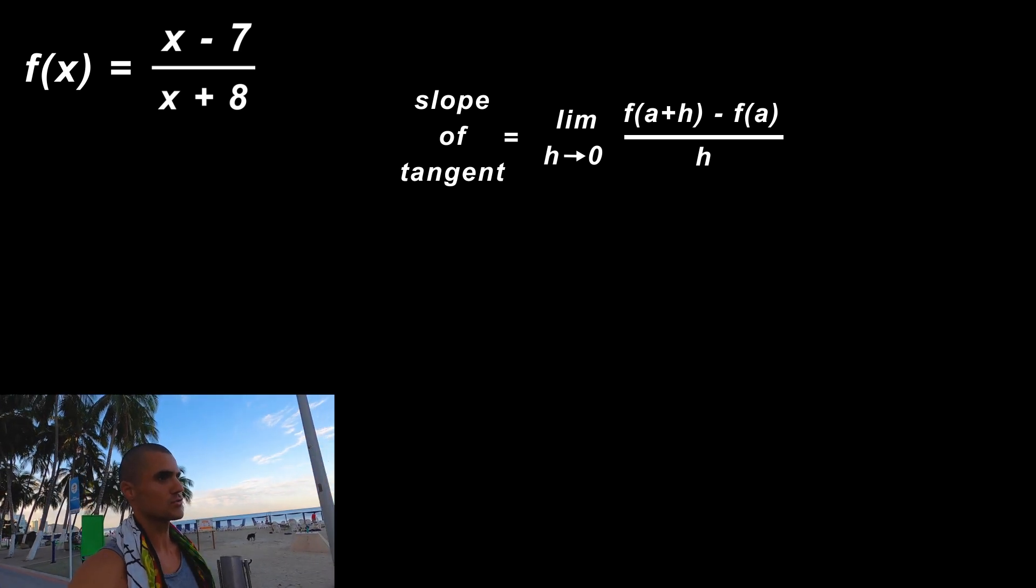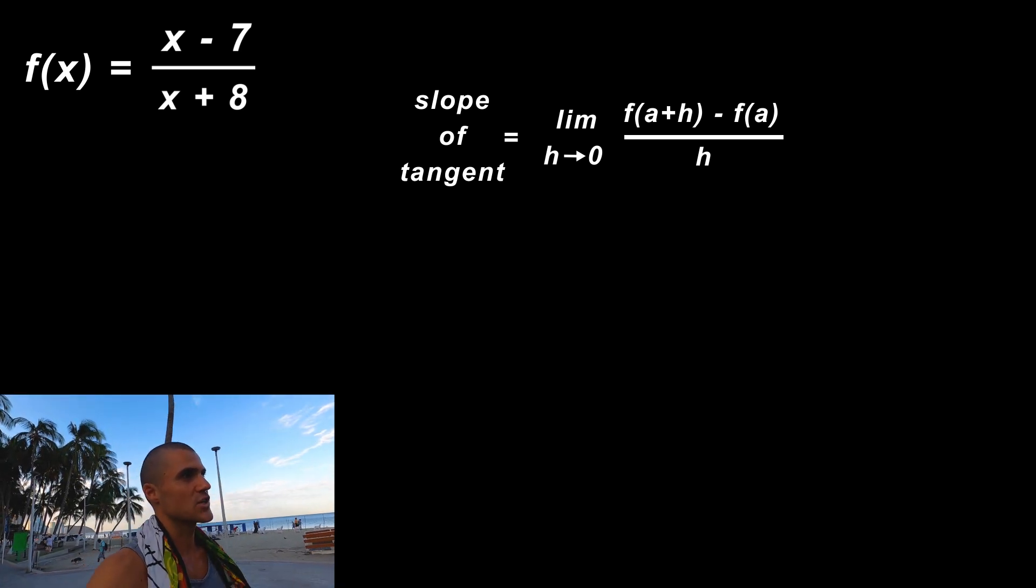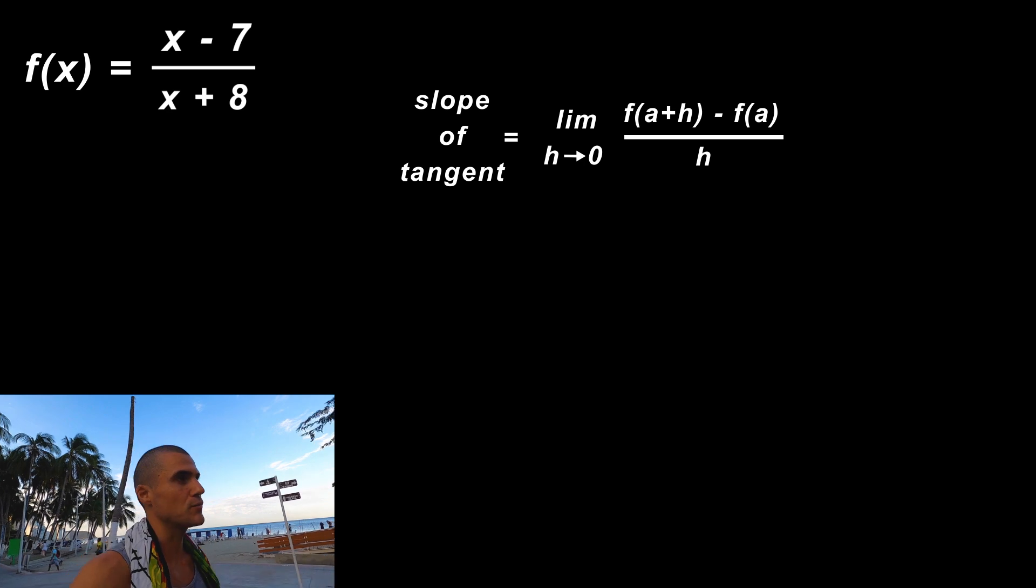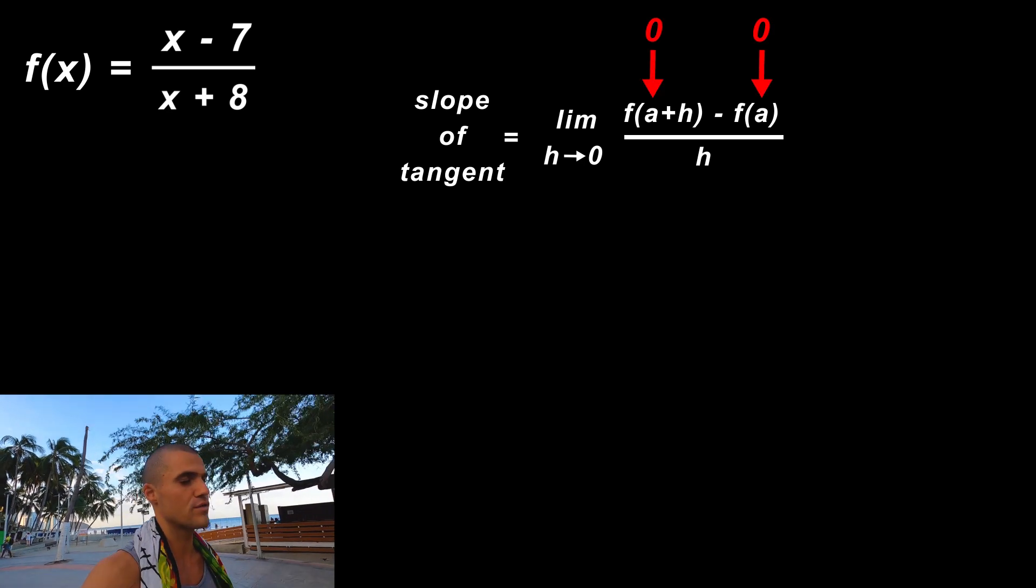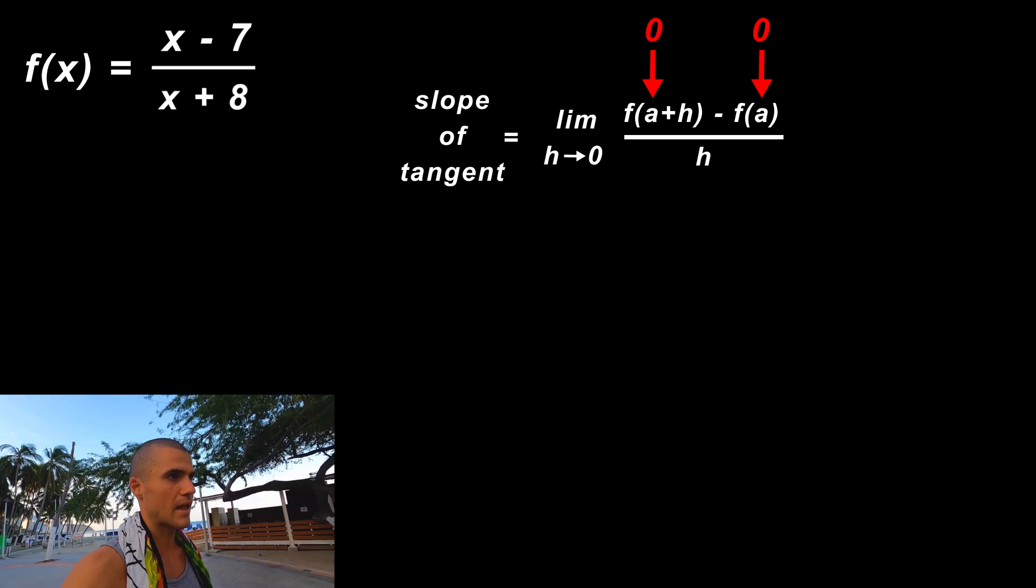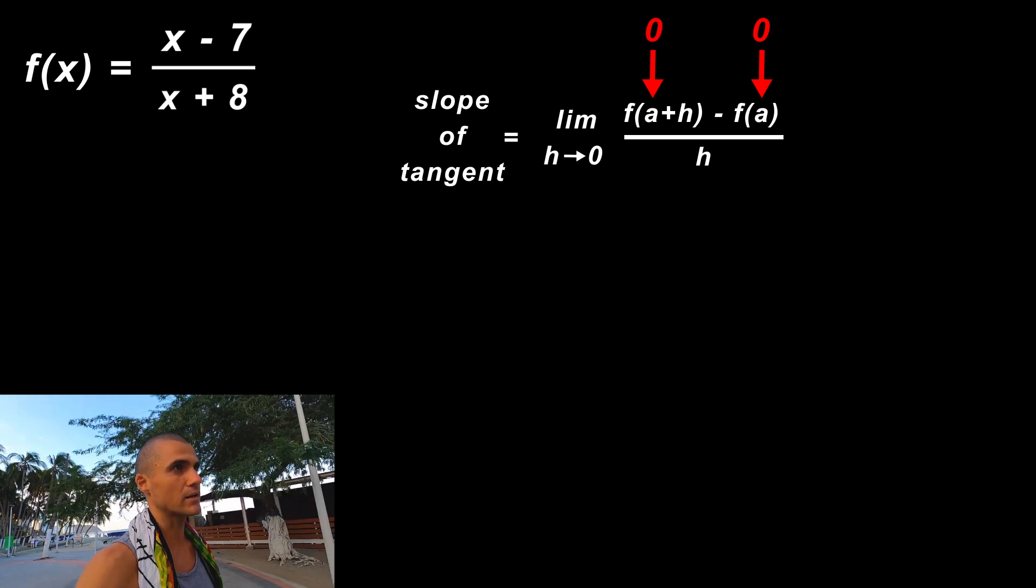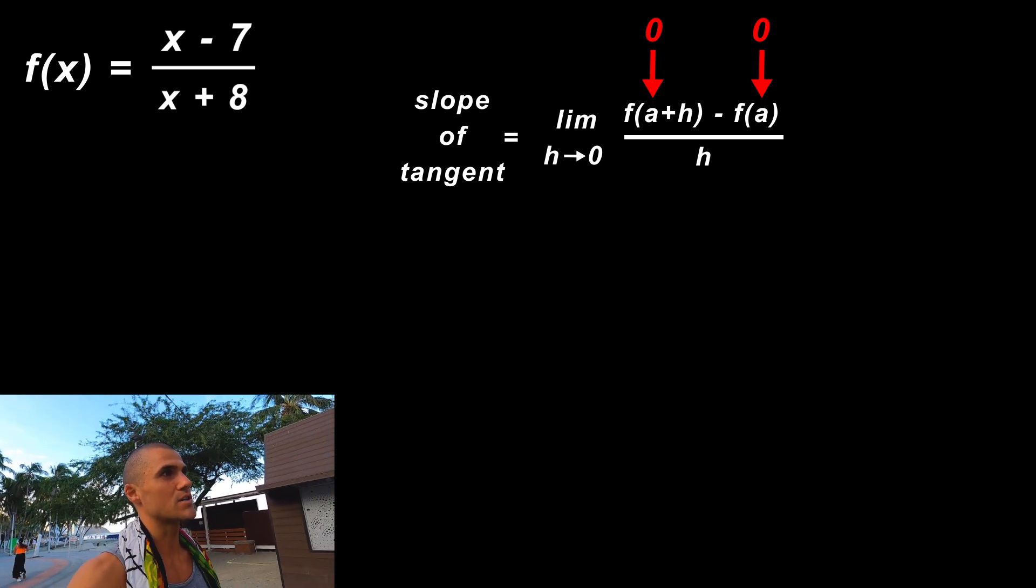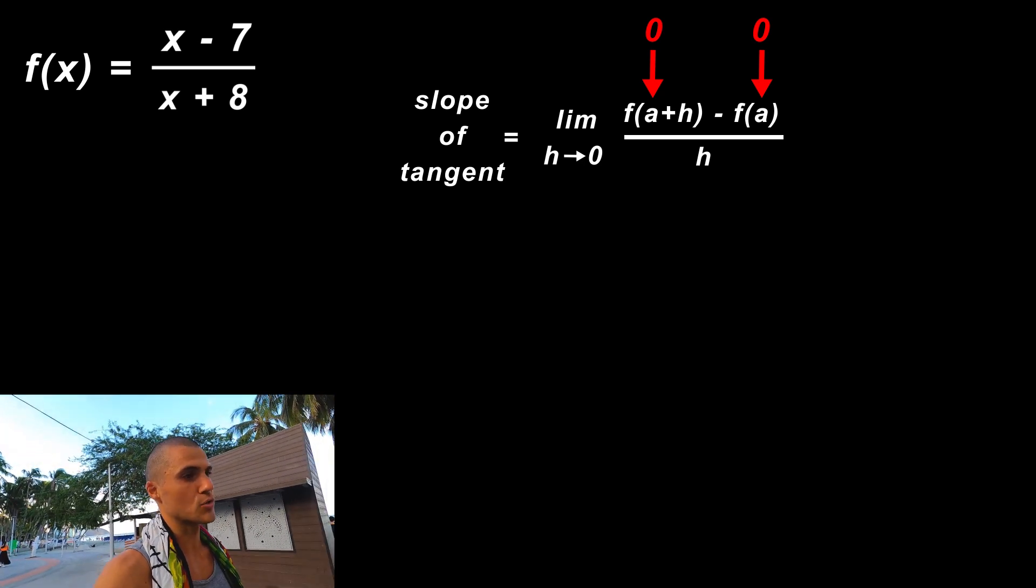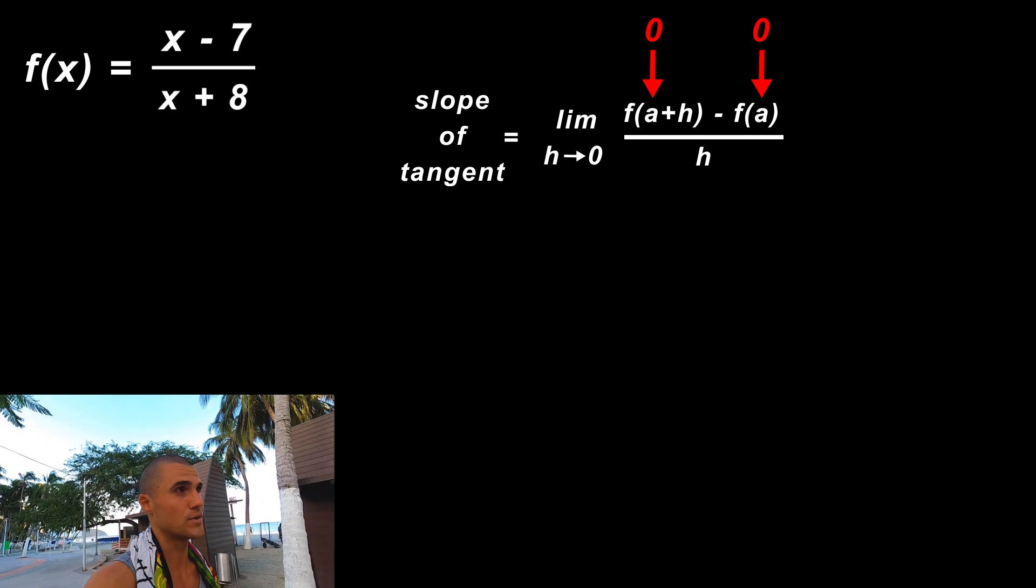For the first part we have to find the slope of the tangent at an x value of 0. You could plug in 0 right away for the a value and get the slope directly, however I don't suggest doing it that way because we're also going to have to find the slope of the tangent at a different x value, negative 9, and then we're also going to have to find x values when the slope of the tangent is equal to 5/3.